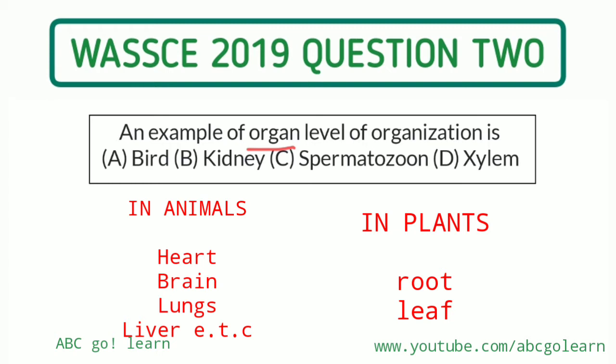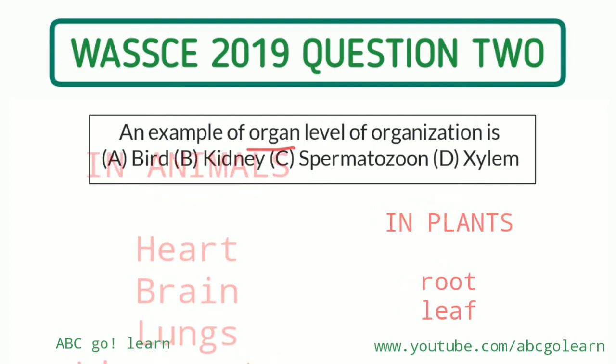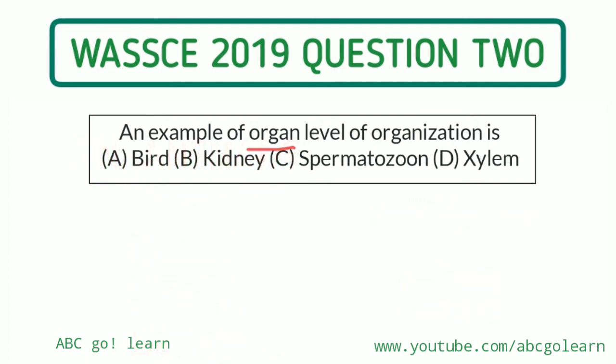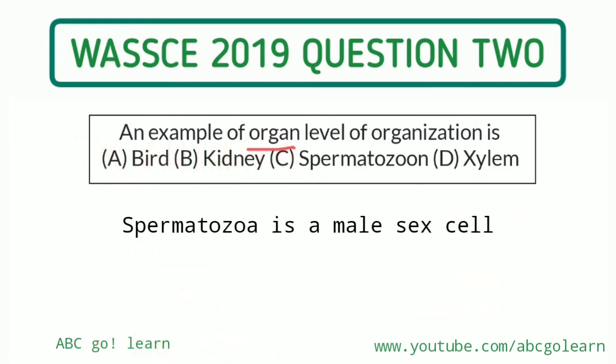In plants, we have roots and leaves as organs — just note this, because you could be asked something like that. Now when we are talking about spermatozoon, spermatozoon is not an organ at all. Spermatozoon is a cell — in fact, it is a male sex cell.